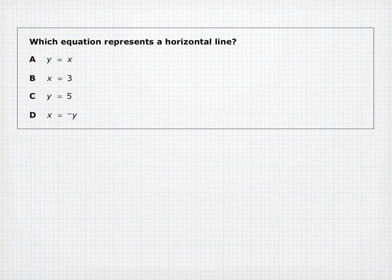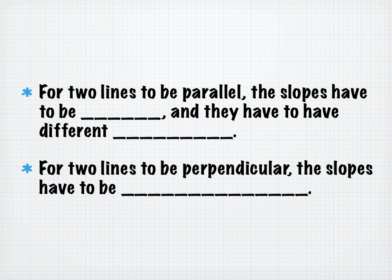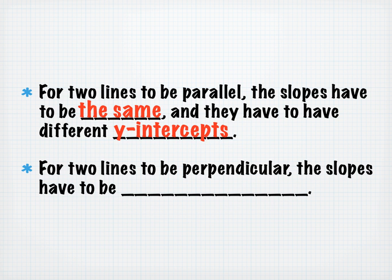A horizontal line is parallel to the X-axis and has a slope of 0 — eliminate answers with non-zero slope. Any equation of the form X equals a constant represents a vertical line crossing the X-axis, not a horizontal line. For two lines to be parallel, they must have the same slope but different Y-intercepts. For two lines to be perpendicular, their slopes must be negative reciprocals of each other.